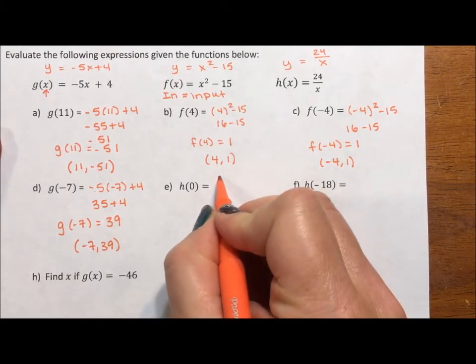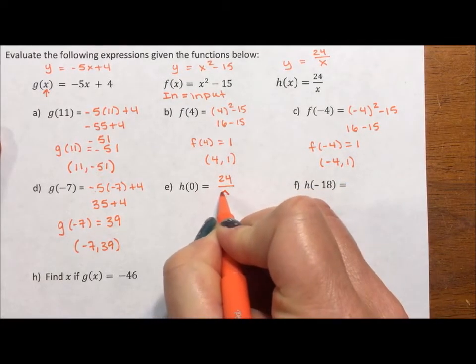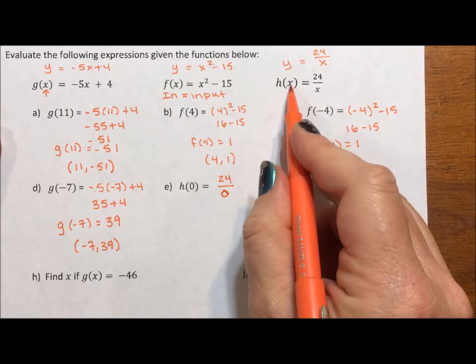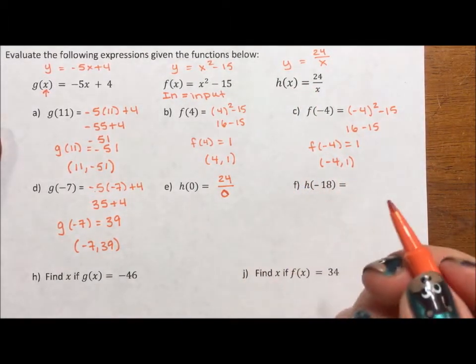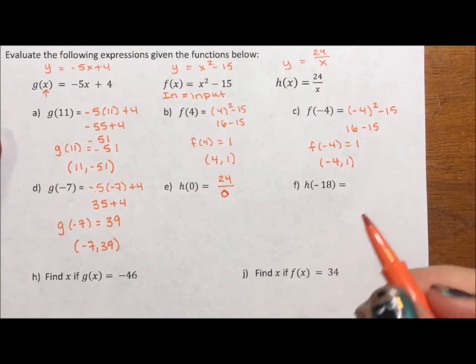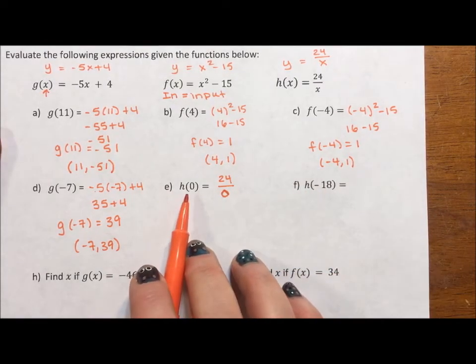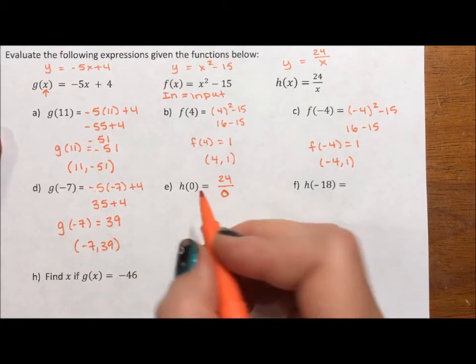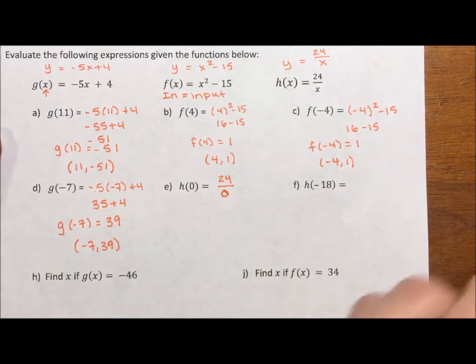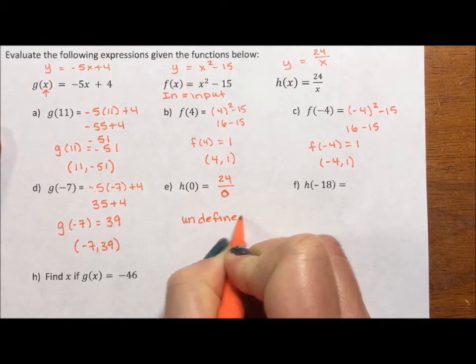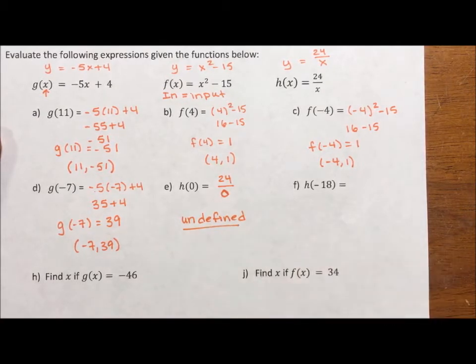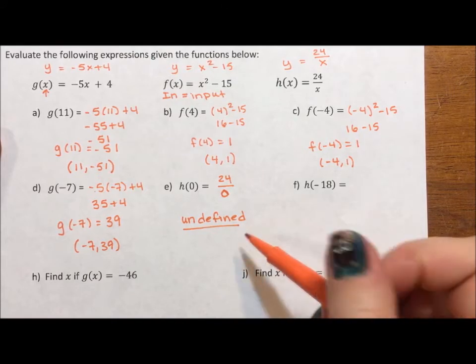h(0). 24 divided by 0. Putting 0 in for x of h(x). You can never have 0 in the denominator of a fraction. So this is not a point on the graph. 0 is not in the domain. Domain defines what inputs are allowed. We say undefined whenever there's a 0 in the denominator.